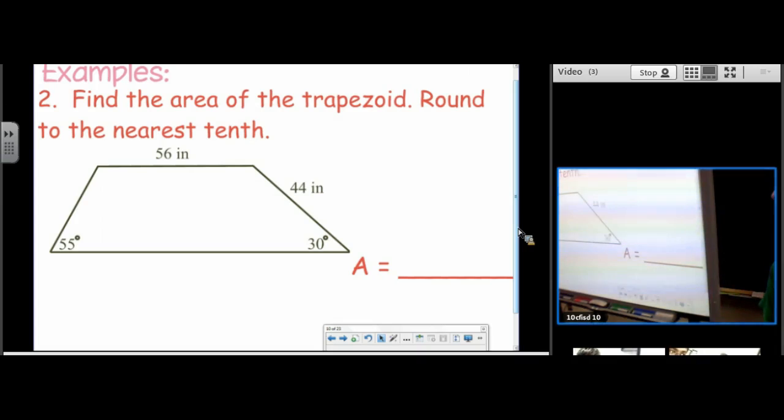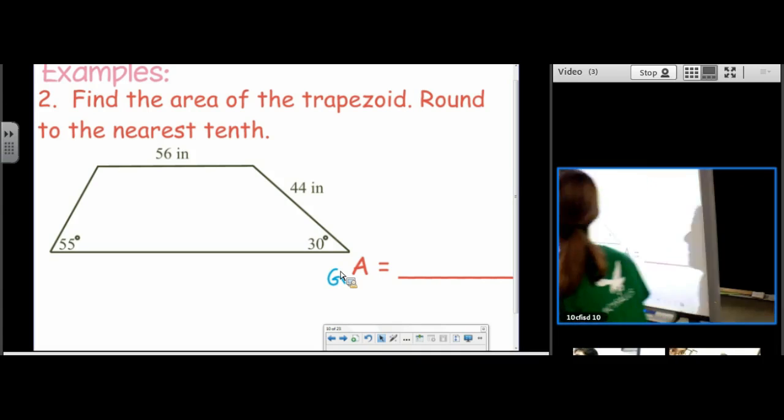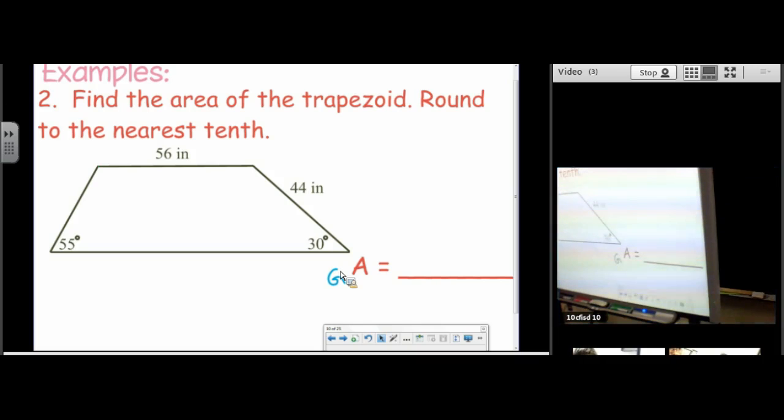Find the area around the nearest tenth. Start to do a couple things. We know that to find the area, we're going to need a height. We're actually going to draw in both heights. Now notice that it says to round until the nearest tenth. So that's a hint that we're probably going to have to use trig. We have a 30, 60, 90 over here.